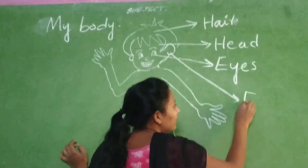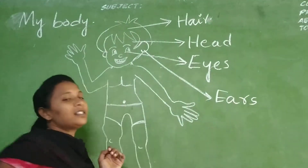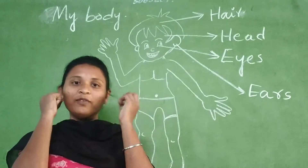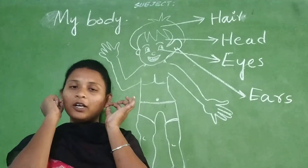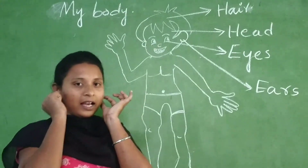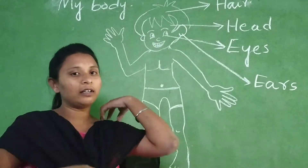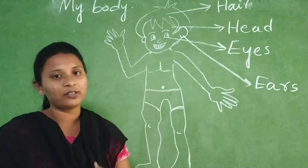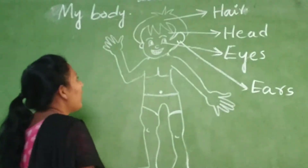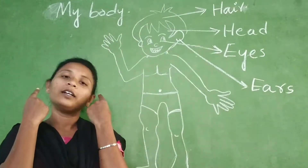Now see this. What is this? Ears. I have two ears. How many ears do you have? I have two ears. For you children, how many ears do you have? Two ears.